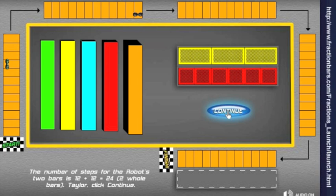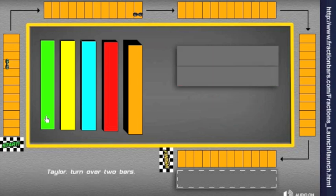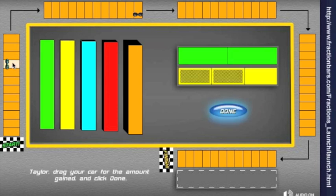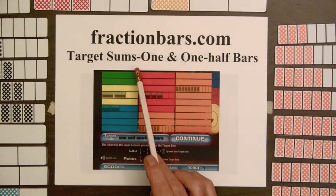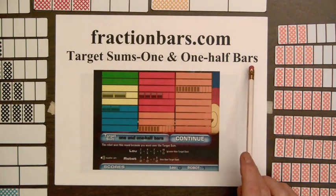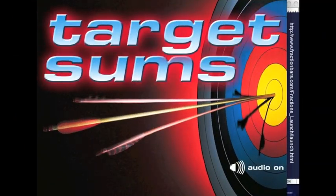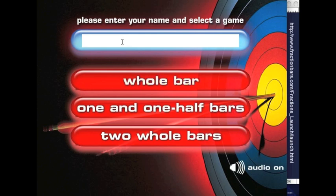The object of this game is to reach the finish before the robot. This game is readiness for finding the sum of two fractions. The second game on this website is target sums. One and one-half bars. Ben clicks Start Game, types his name, and selects one and one-half bars option.